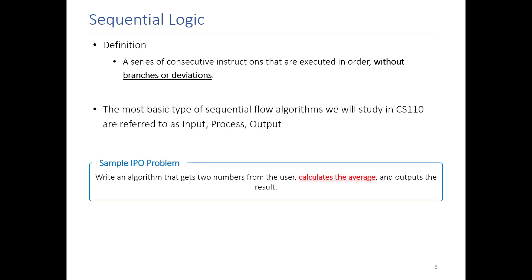And this is the problem we were focusing on. So we're going to get two numbers from the user, calculate the average, and output the result. I've highlighted the calculating the average part because that's what we're focusing on here with processing.